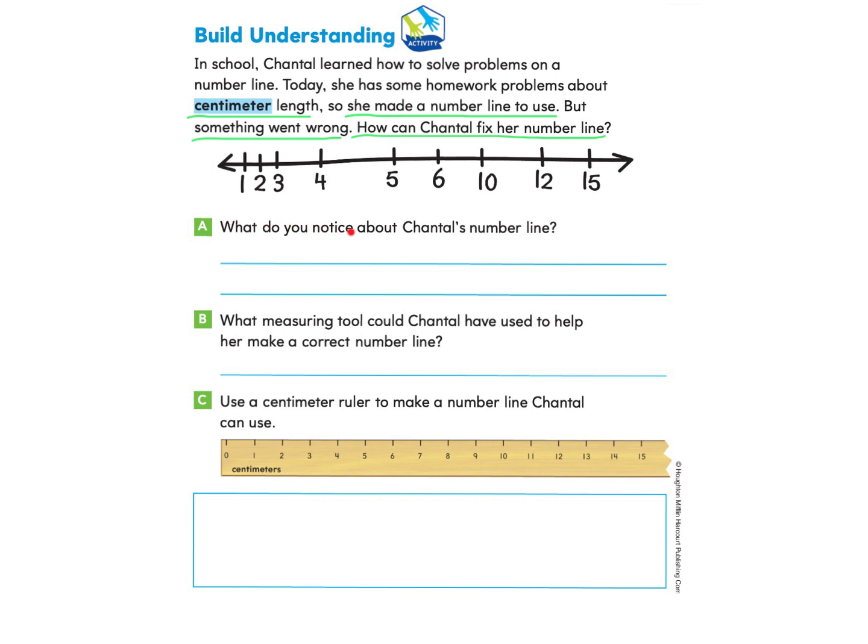What do you notice about Chantel's number line? This might be a good time to pause and write what you think and come back to see what I found. I noticed that some of the numbers on her number line are missing. See where it goes from 6 to 10?